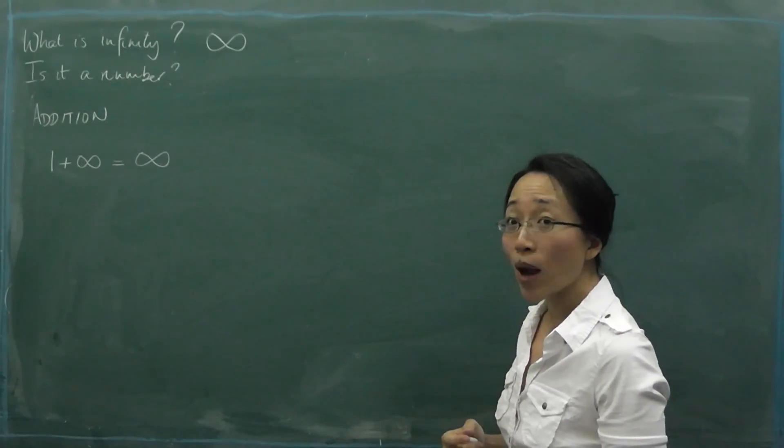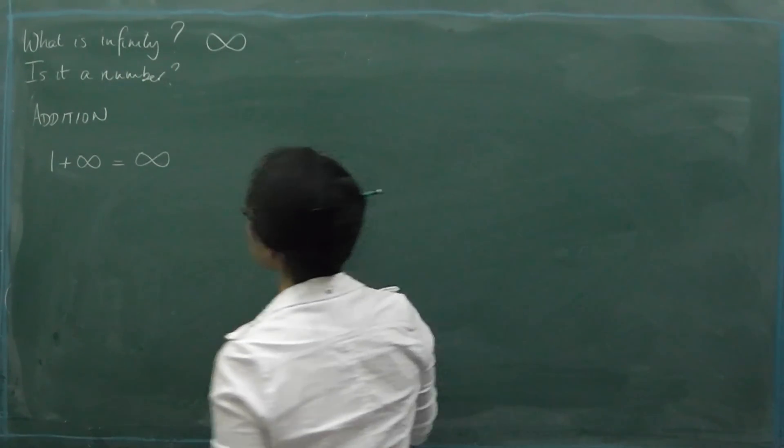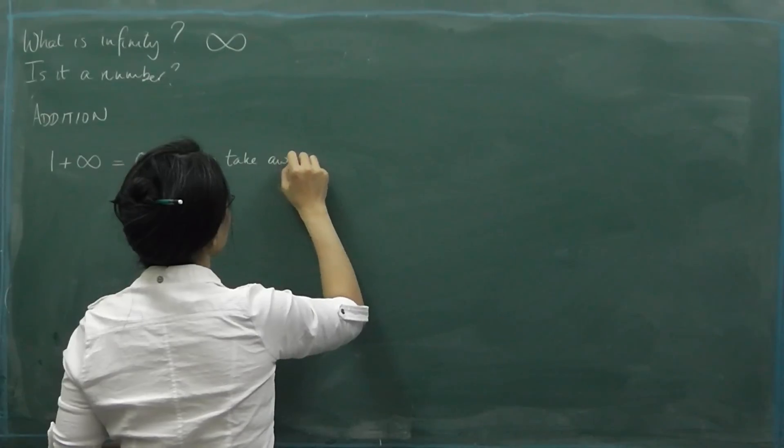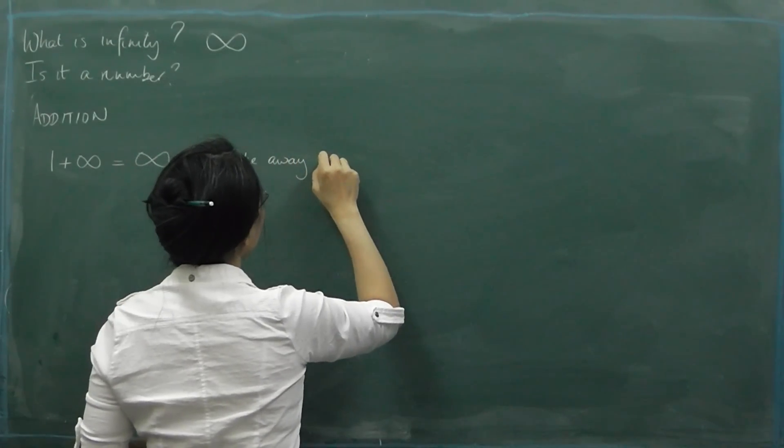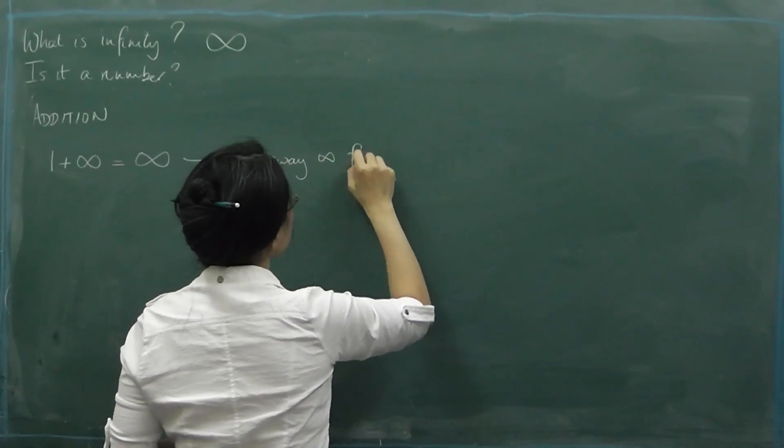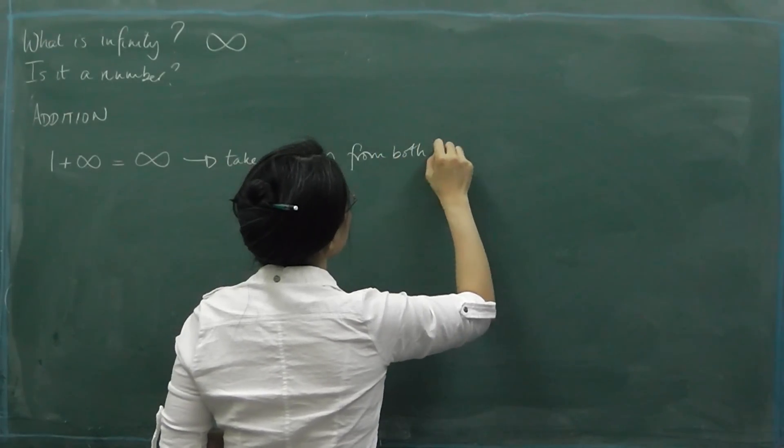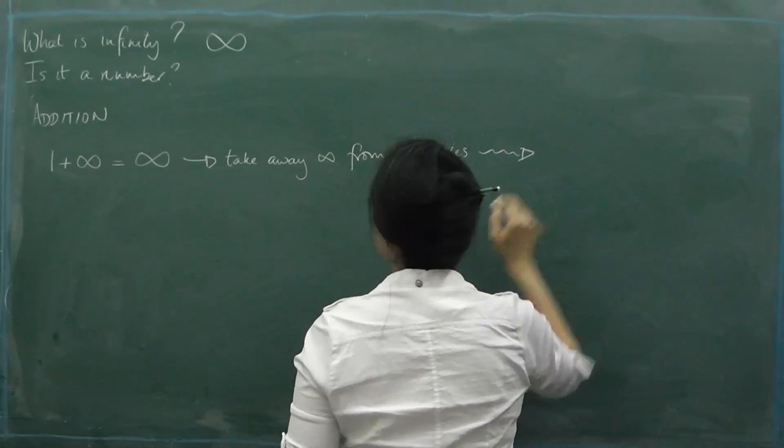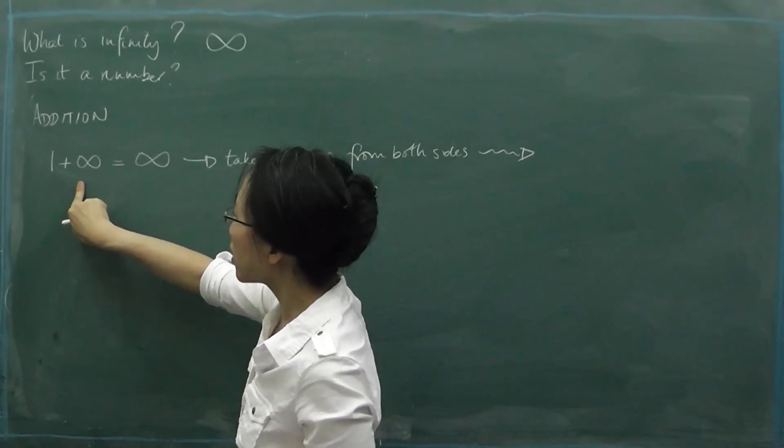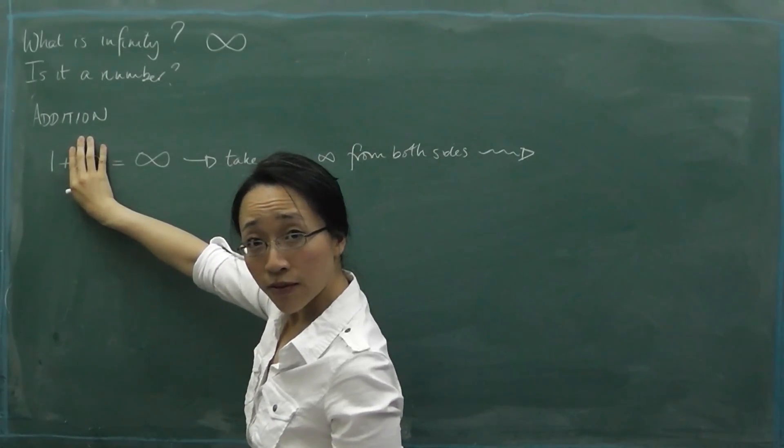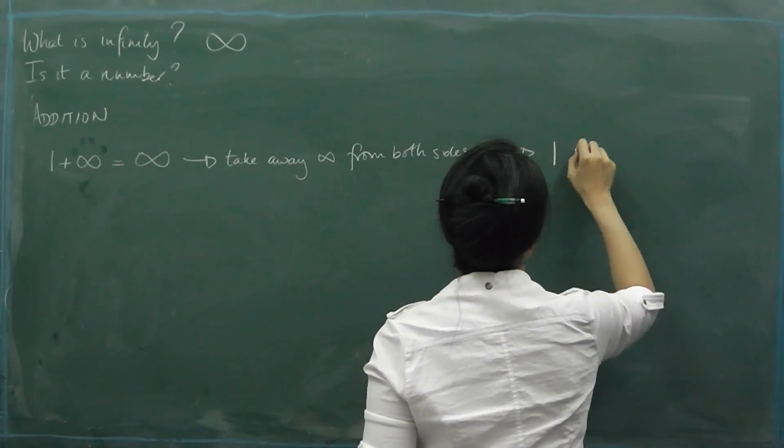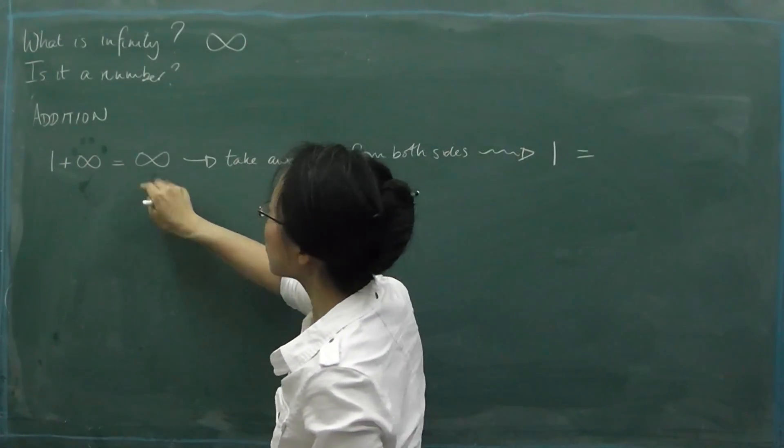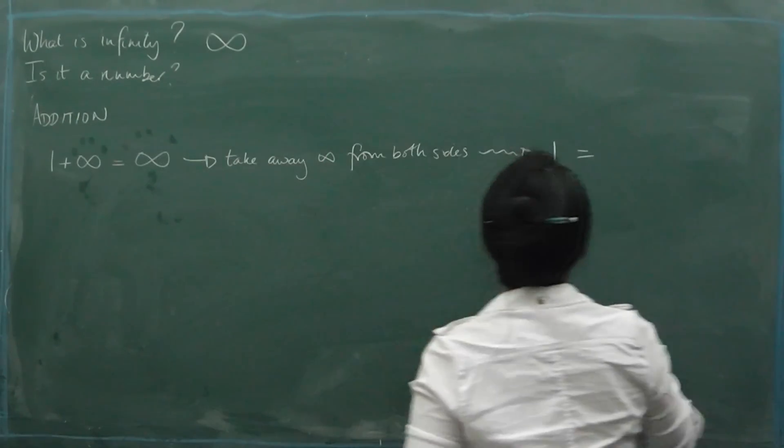Well, let's try taking away infinity from both sides. Take away infinity from both sides. Now, if we take away infinity from the left-hand side, it'll just get rid of that infinity, right? So we should just get left with one. And if we take away infinity from the right-hand side, that ought to just get rid of that infinity. So we'll end up with zero.